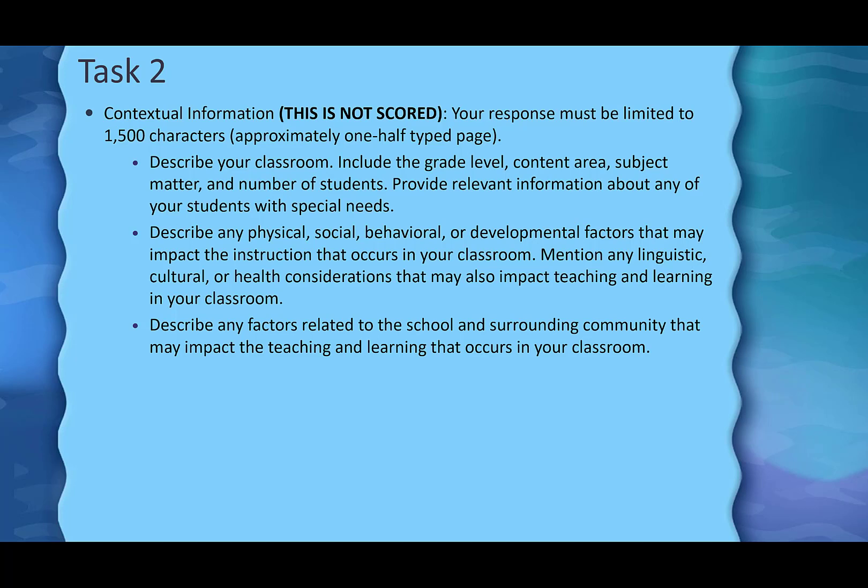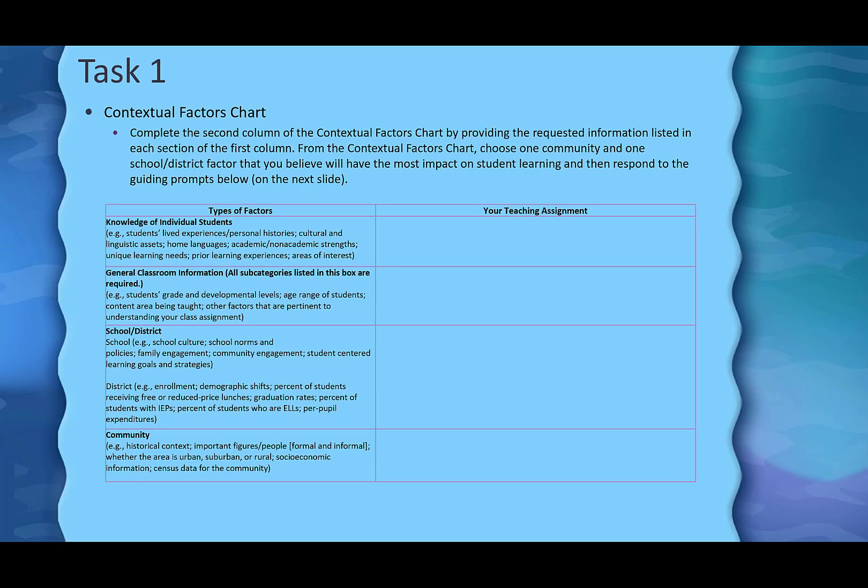Finally, describe any factors related to the school and surrounding community that may impact teaching and learning in your classroom. The good news is you already have this information — you gathered it during Task 1 when you filled out the contextual factors chart. Now you just need to take what you listed in that chart and turn it into paragraph form.